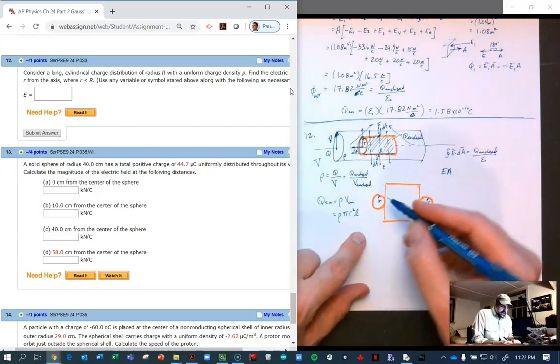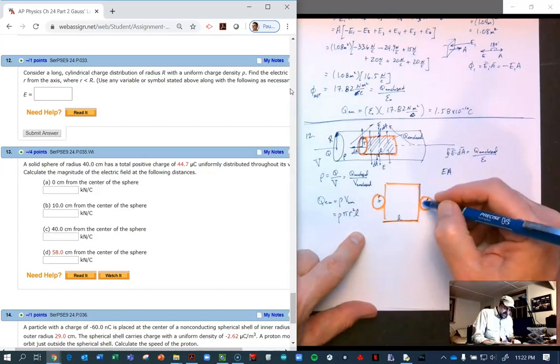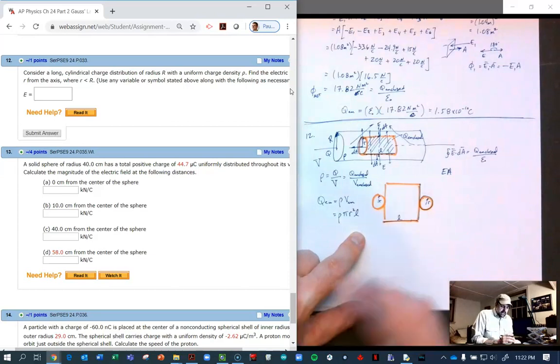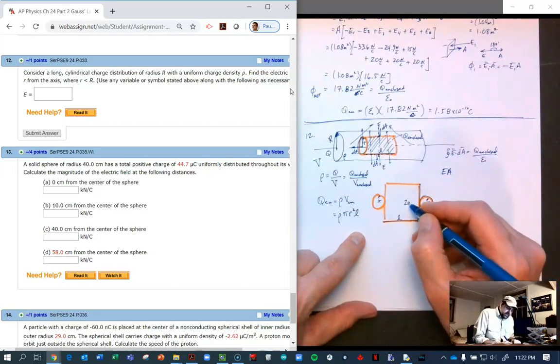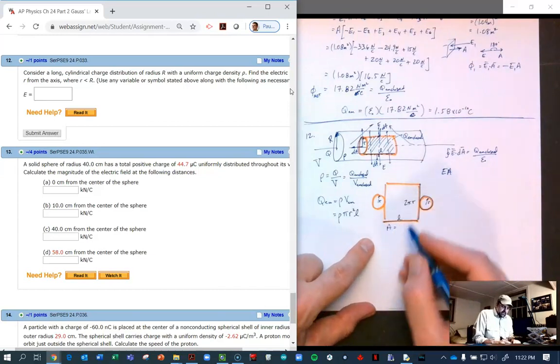This has a radius little r, this length here is L, and this is simply the wrapper that goes around the edge. This is just the circumference 2π little r, so the area of that middle wrapper part is 2π r times L.